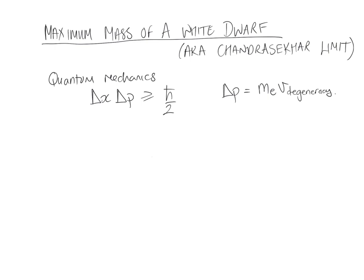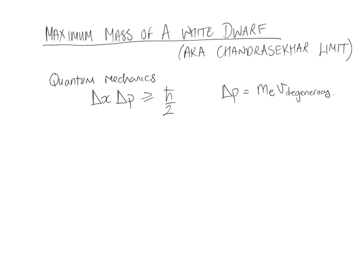To work out what that velocity has to be, we need to figure out how much volume each electron has in a white dwarf.